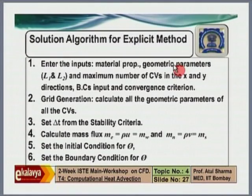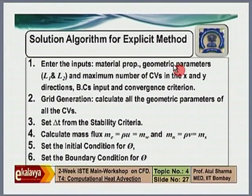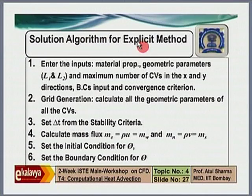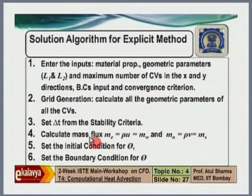This is the solution algorithm I had discussed in the last lecture. First, there are user inputs, then grid generation, then you calculate the time step from the stability criteria. Note that I am discussing the solution algorithm for the explicit method. Once we have calculated the time step, we calculate the mass flux.